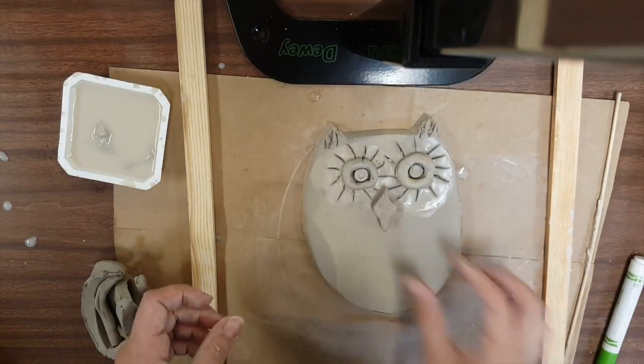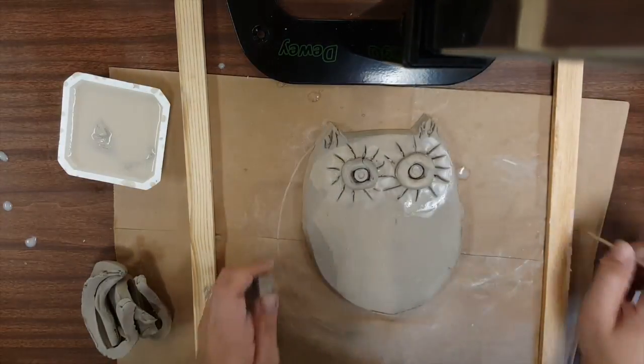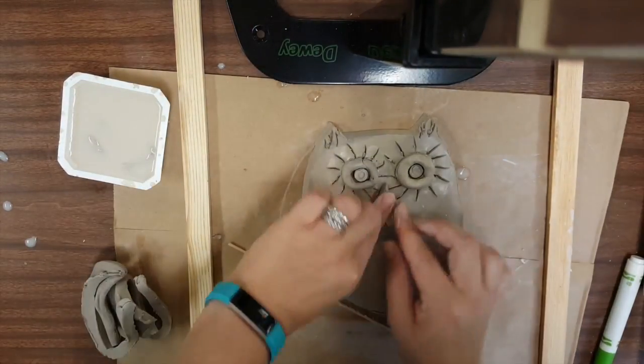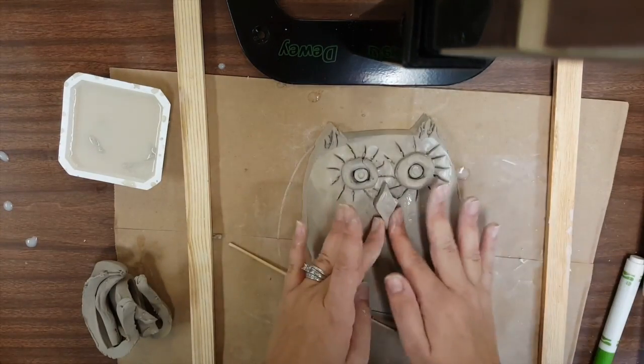Once you get it shaped and it looks about the right size, we're following those steps: scoring, adding the slip, sticking it on, and smoothing the edges.